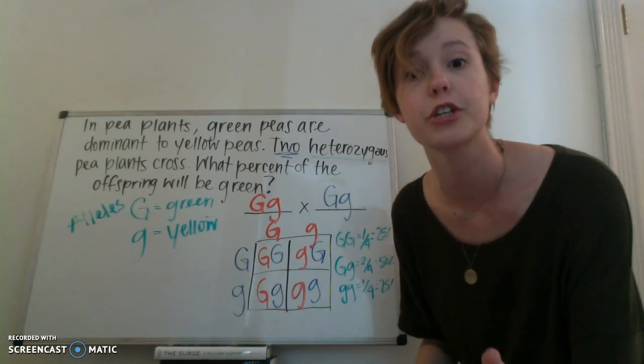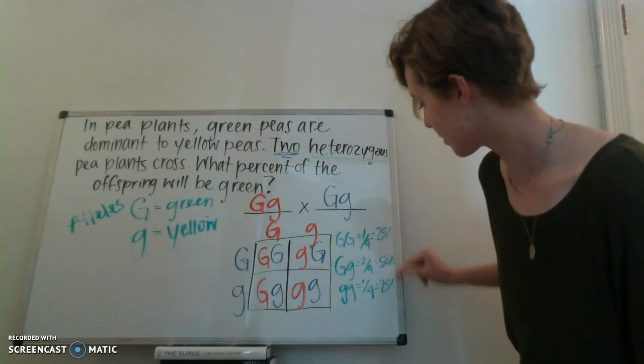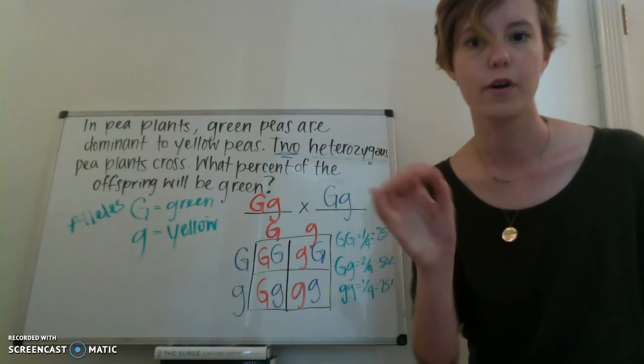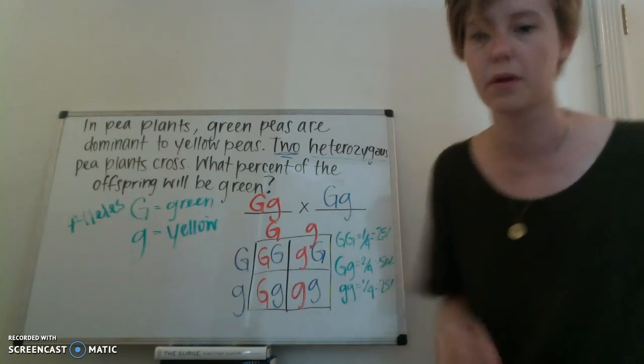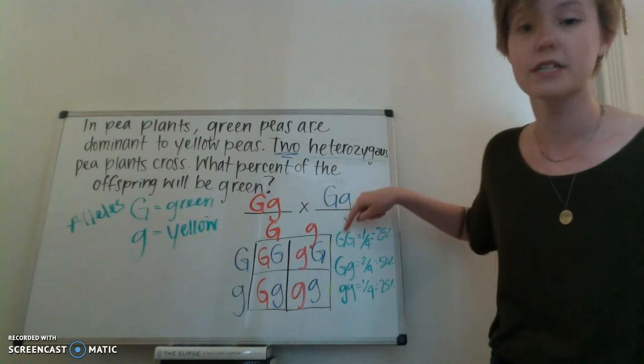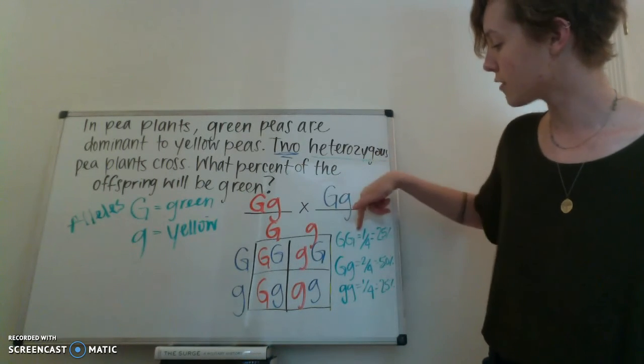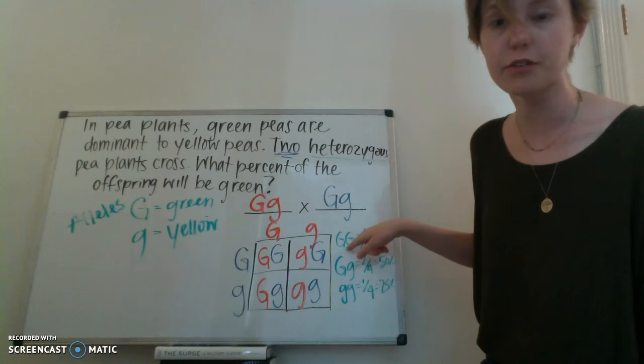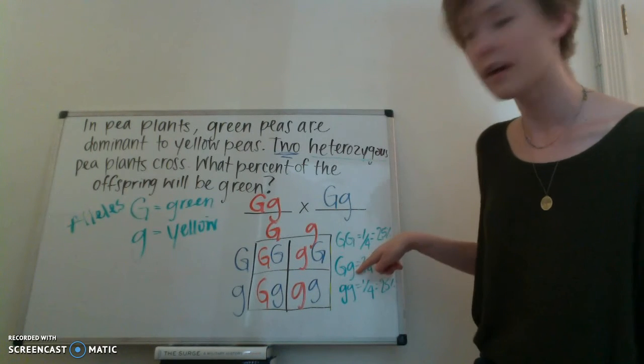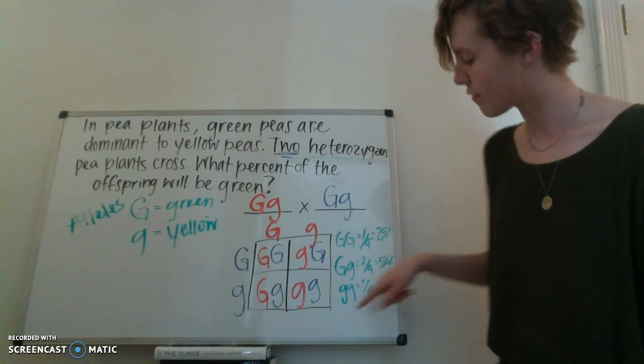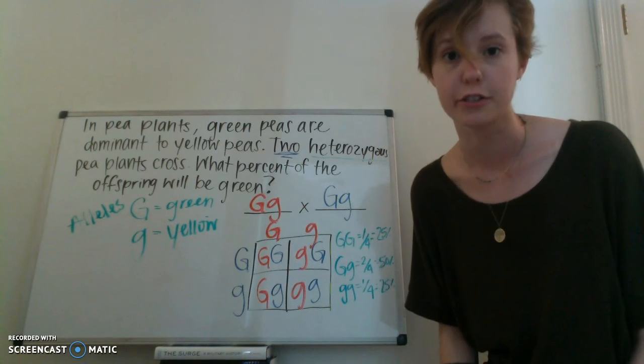Hint! If you want to check and make sure you did it right, these numbers should add up to 100, which they do. We are very close to answering the problem. Once again, this information means that 25% of the offspring of these two parents have a big G, big G genotype. 50% have a big G, little g genotype. And 25% have a little g, little g genotype.